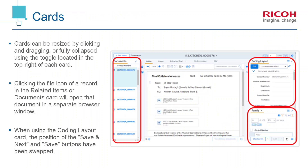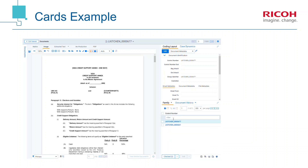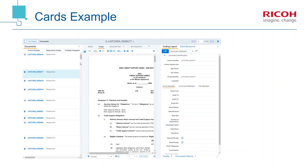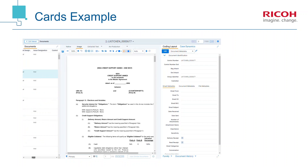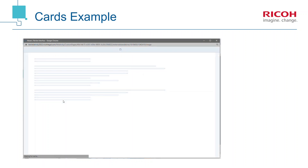Relativity refers to the panels containing the coding layout, related items, and document list as cards that can be expanded or collapsed as needed. For example, if related items such as families or duplicates are important to your review, the card can be toggled on via the arrow icon, and the related item can then be switched via the drop-down. When the document list card is expanded, it will contain the same columns displayed in the view or saved search being used. If the file icon is included in the view, clicking it from within the card will open the record in a separate browser window.